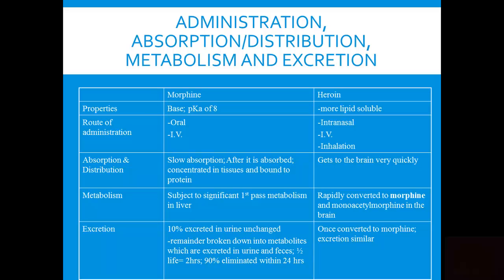Heroin is morphine with acetyl groups added to it. The addition of those acetyl groups makes heroin much more lipid soluble than morphine by itself. In its chemical composition, heroin is extremely lipid soluble, meaning it gets into the bloodstream quickly, is absorbed very quickly, and gets to the brain very quickly. But here's something a lot of people do not realize: the heroin molecule itself is inactive at the opiate receptor sites in the brain.